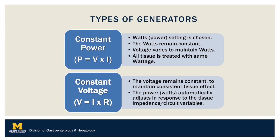Current electrosurgical generators employ either constant power or constant voltage. With constant power generators, the set power is kept at a constant while voltage changes in real time to ensure that the watts delivered to the tissue is constant. In contrast, with constant voltage generators, the power delivered varies with changes in the tissue resistance. Specifically, as tissue resistance increases, current correspondingly decreases to maintain the desired voltage.